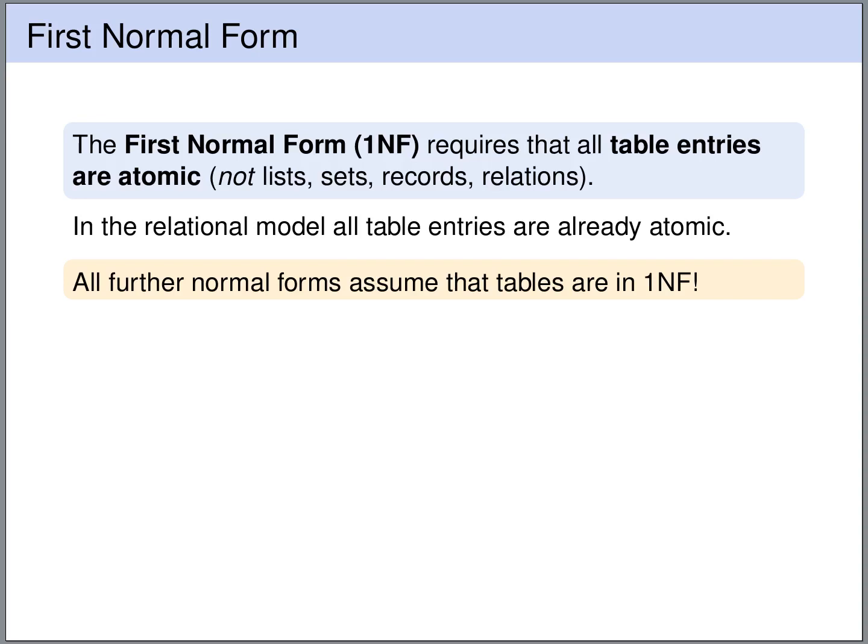All of the normal forms — the third normal form, the Boyce-Codd normal form, and the fourth normal form that we will visit later on — assume that the relations are in first normal form.